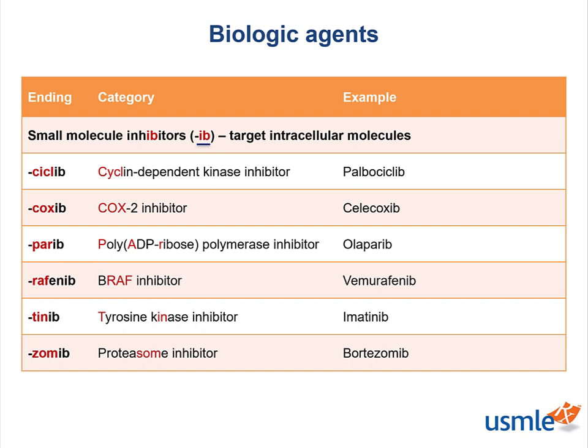Just like our monoclonal antibodies, they have a similar naming structure. They all have the stem 'ib', but their substem is related to their function. While these are all very high yield, one particularly high yield one is imatinib.